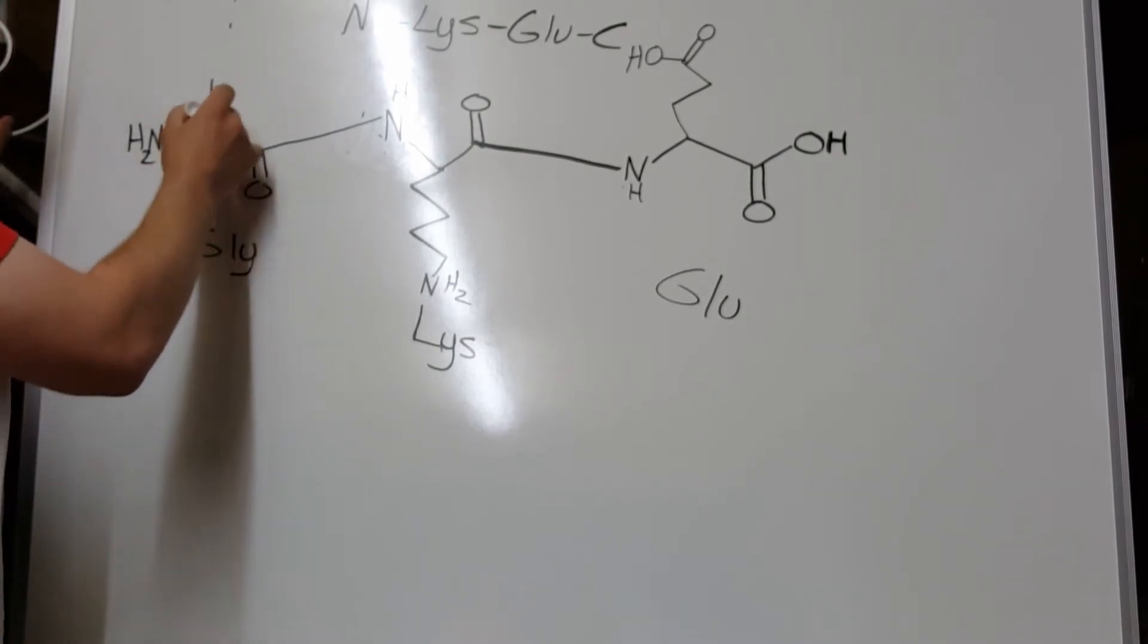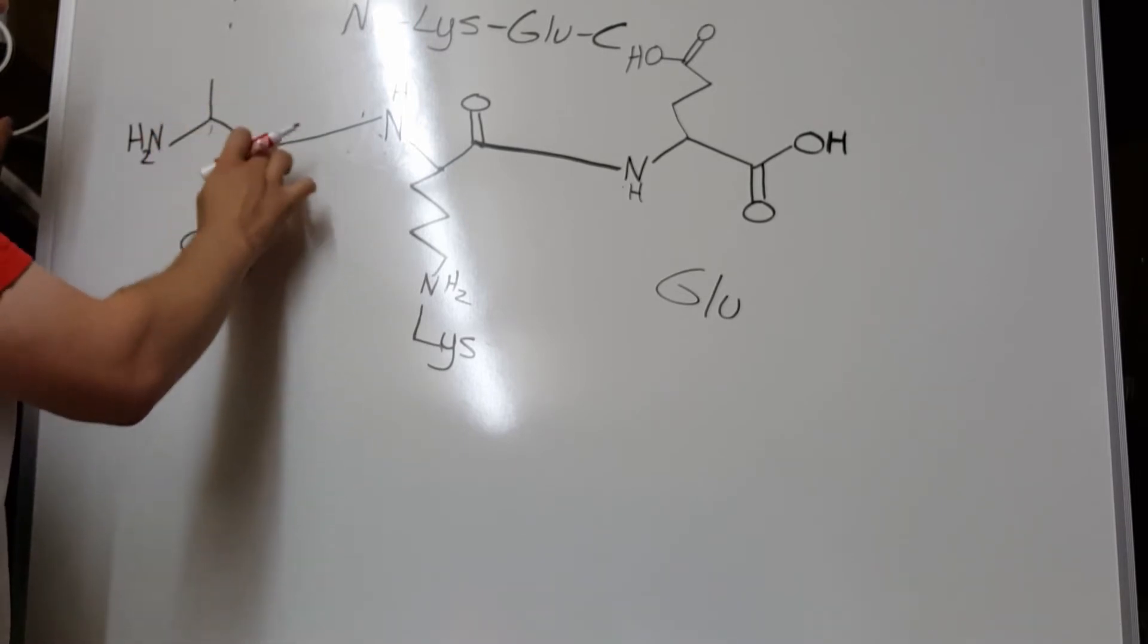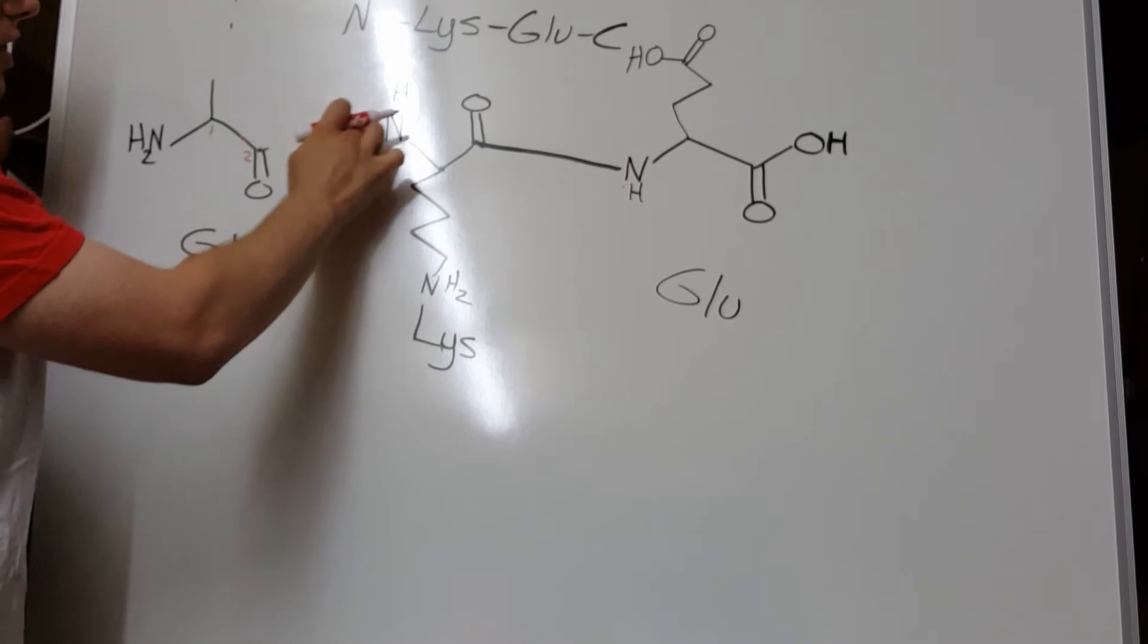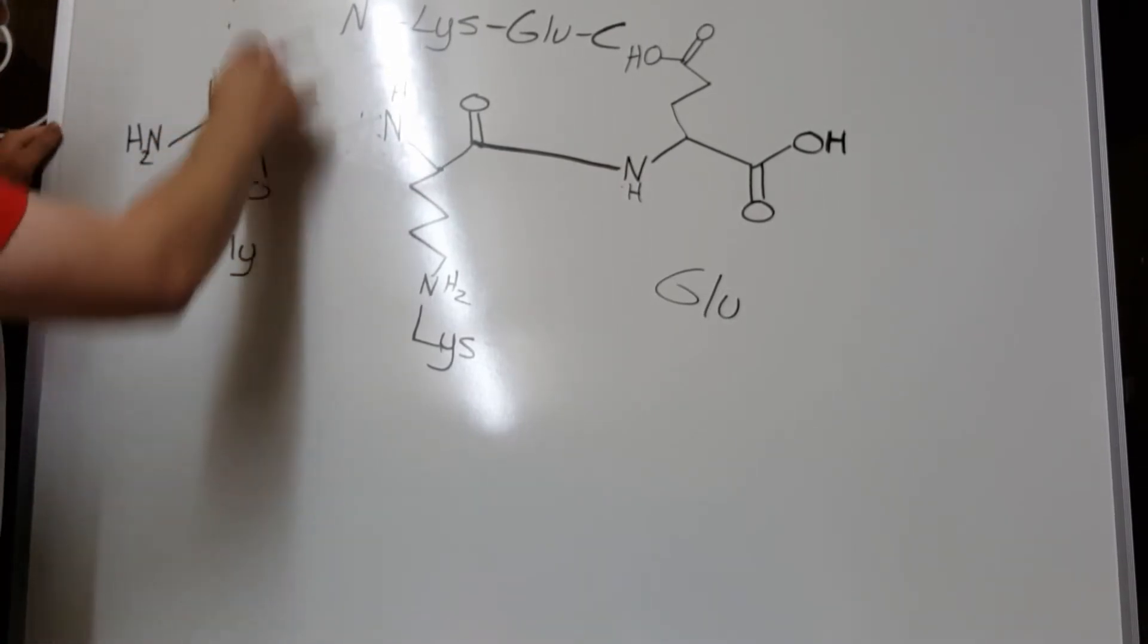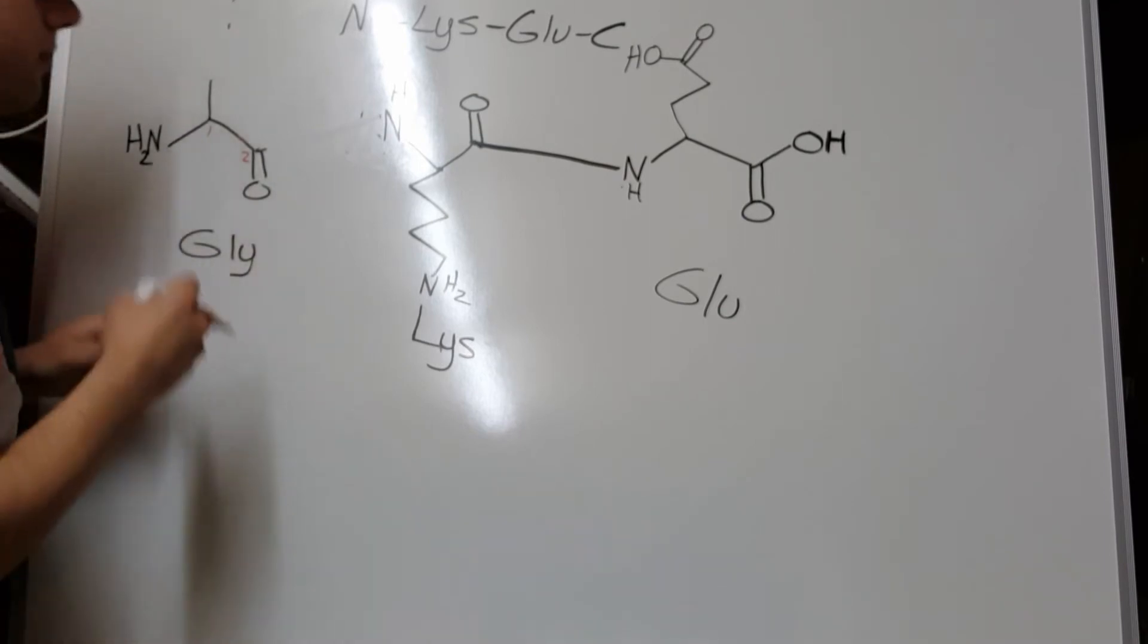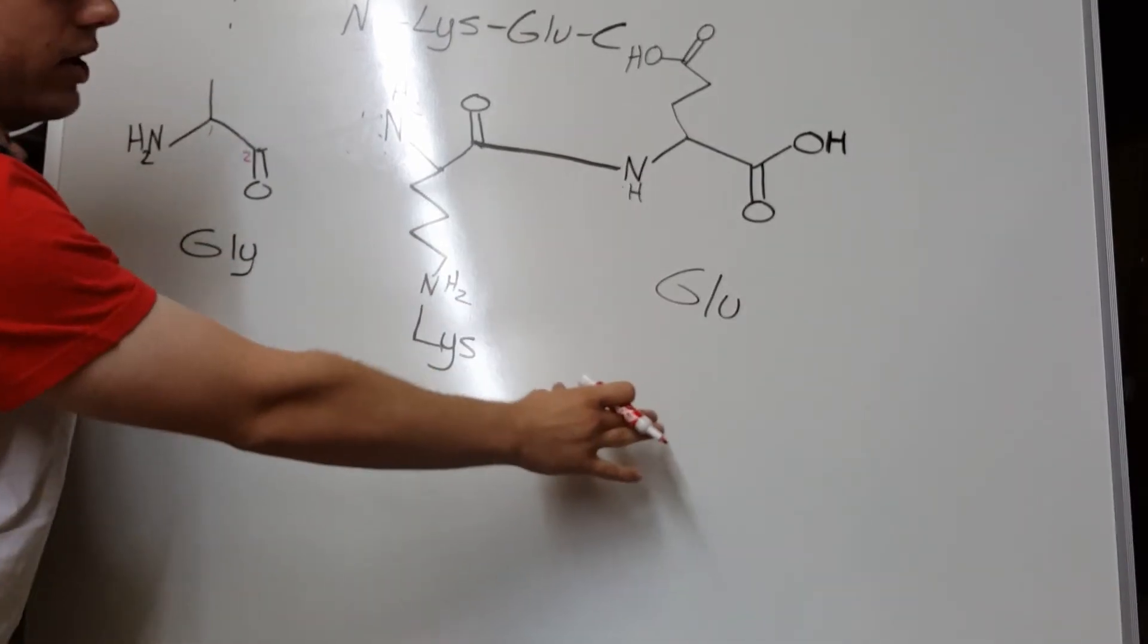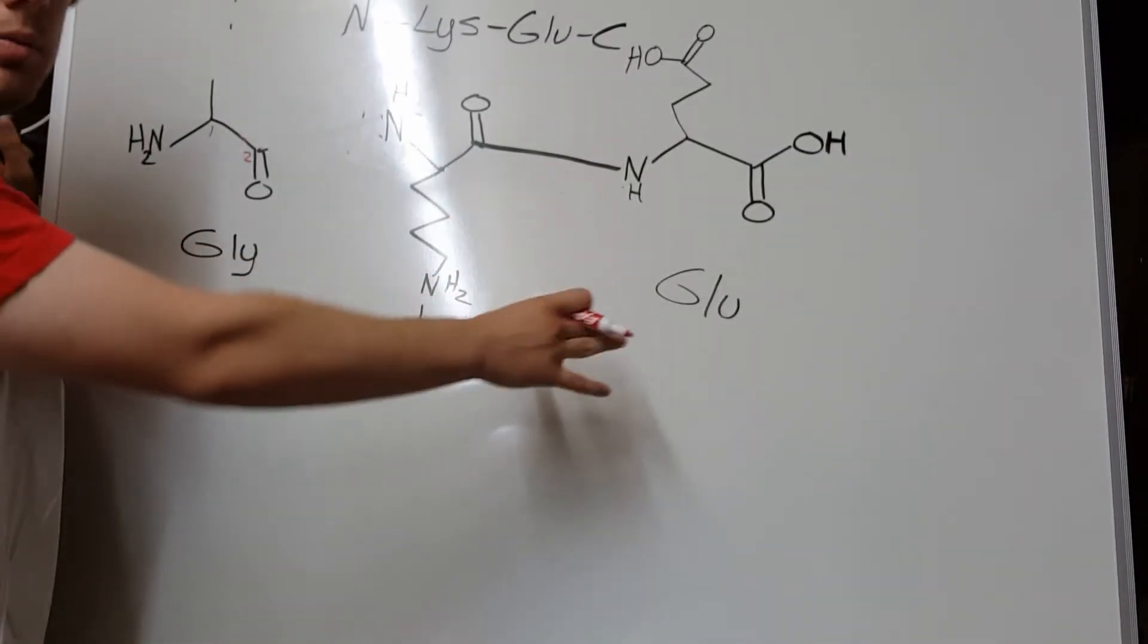So, we know that these must be two carbons of an amino acid, which means this next bond over is the bond we know we have to slice off. So, that's the bond that's going to get chopped off. Glycine is going to leave, and you'd be left with lysine-glutamate as your polypeptide after one Edman degradation.